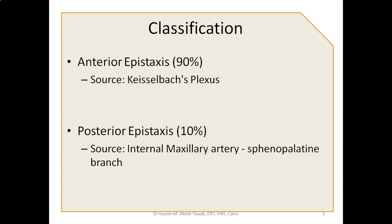90% of cases of epistaxis are anterior epistaxis, which is usually mild, and the source is usually the Kesselbach's plexus. Posterior epistaxis accounts for 10% of cases, but is usually severe and usually needs intervention. The source in posterior epistaxis will be the internal maxillary artery and the sphenopalatine branch.